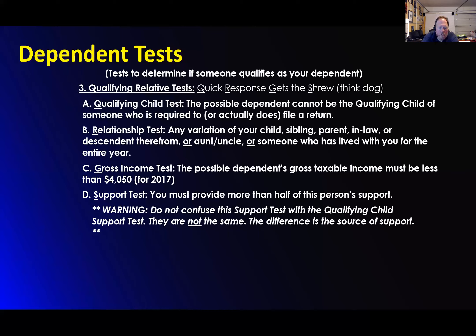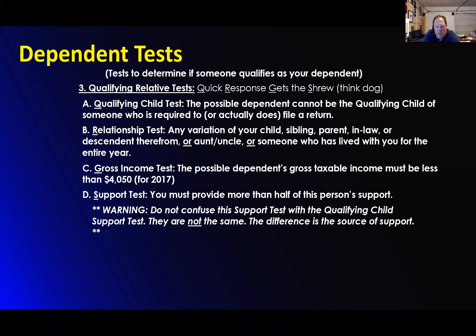Number one: are they a qualifying child? They cannot be a qualifying child of someone else. If they've qualified as somebody else's qualifying child, they cannot be your qualifying relative. The relationship test: any variation of your child, your sibling, your parent, your in-law, your descendant, uncle and aunt, or someone who has lived with you for the entire year.